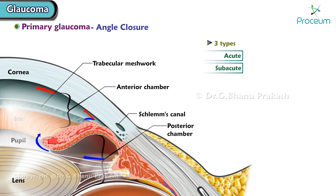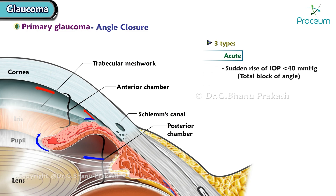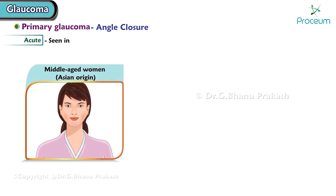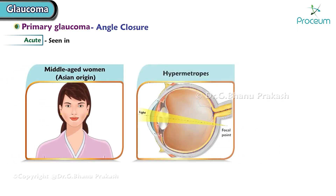There are three clinical types: acute, subacute, and chronic. In acute angle closure glaucoma, there is a sudden rise of intraocular pressure greater than 40 mmHg due to a total block of the angle. It is not self-resolving and is usually seen in middle-aged women of Asian origin.